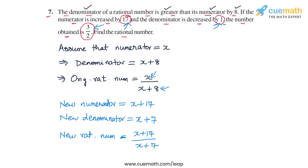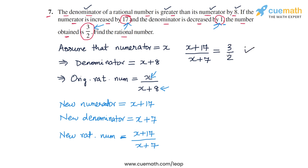The new rational number will be x plus 17 over x plus 7. We are told that this new rational number equals 3 by 2. So the equation is: x plus 17 by x plus 7 equals 3 by 2. To solve it, let's cross multiply — 2 with x plus 17, and x plus 7 with 3.